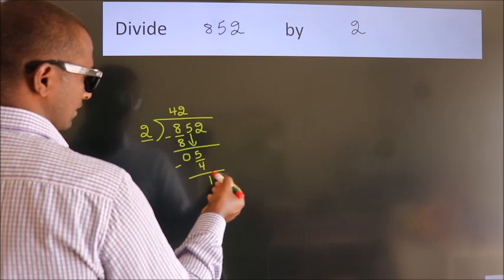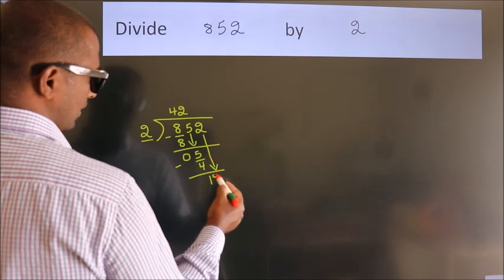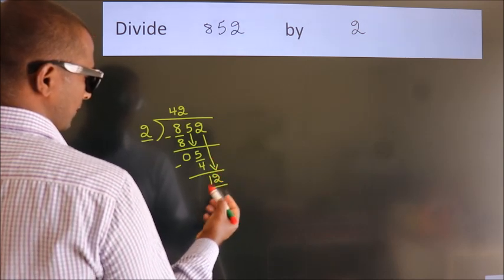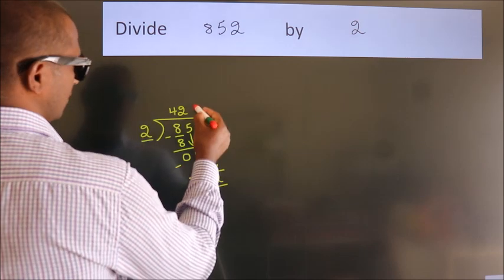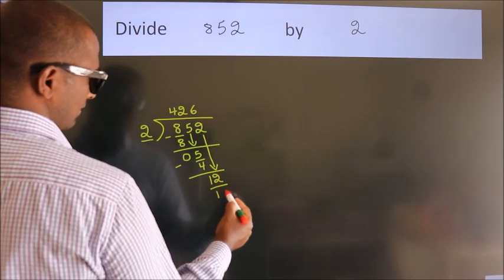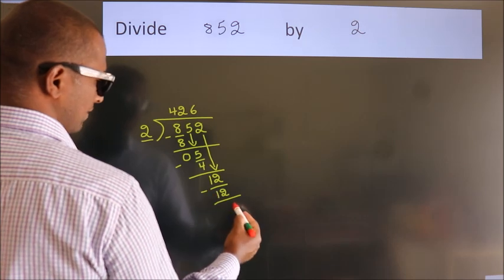After this, bring down the beside number. So 2 down. So 12. When do we get 12 in 2 table? 2 6s, 12. Now we subtract. We get 0.